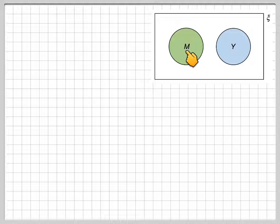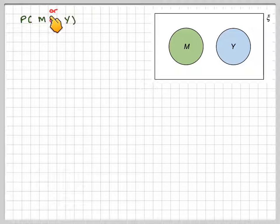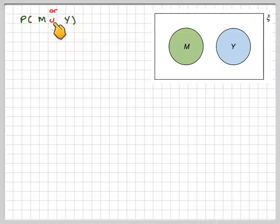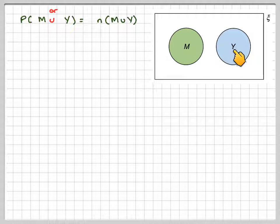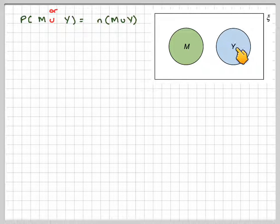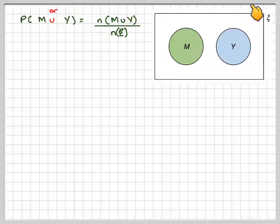If this represents the people who went to a museum and this represents the people who went yachting, the probability of M or Y in set notation is the probability of M ∪ Y. That's going to be the number in M union Y, all those that are shaded, divided by the number in the universal set, which is everything here.